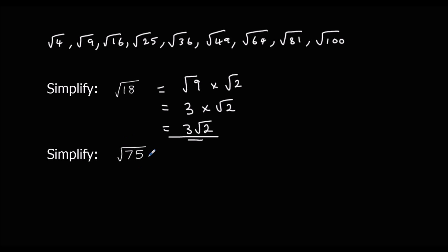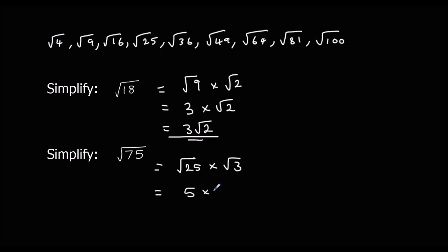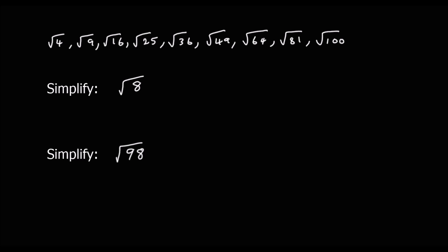Same thing here — we've got 75. Which square number is the biggest factor of 75? That's 25. So square root 75 is square root 25 times square root 3. Square root 25 is 5, so square root 75 in its simplest form is 5 root 3.